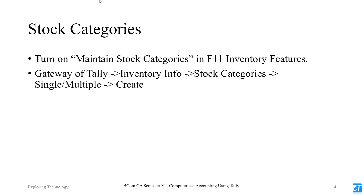Now, stock categories. One organization that we have to store, we can divide into one category. For example, electrical equipment, plumbing equipment - we can divide into one category. We can enable this in F11 inventory features under 'Maintain Stock Categories' and set it to Yes. That is why we have to create a stock category. In the Gateway of Tally, go to Inventory Info, then Stock Category, and you can create a single or multiple option.